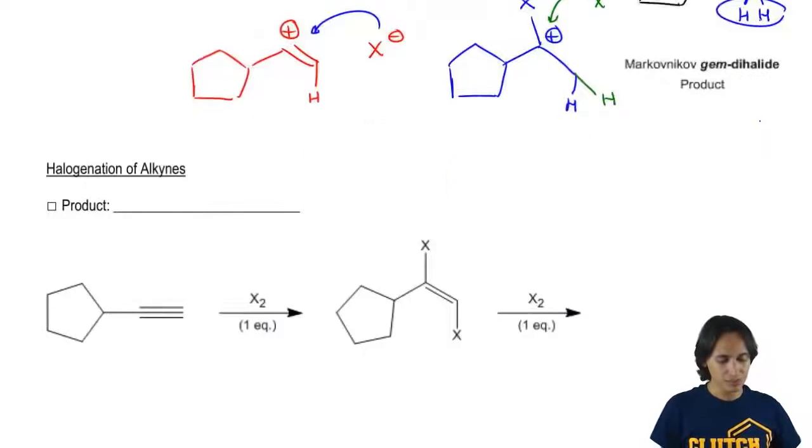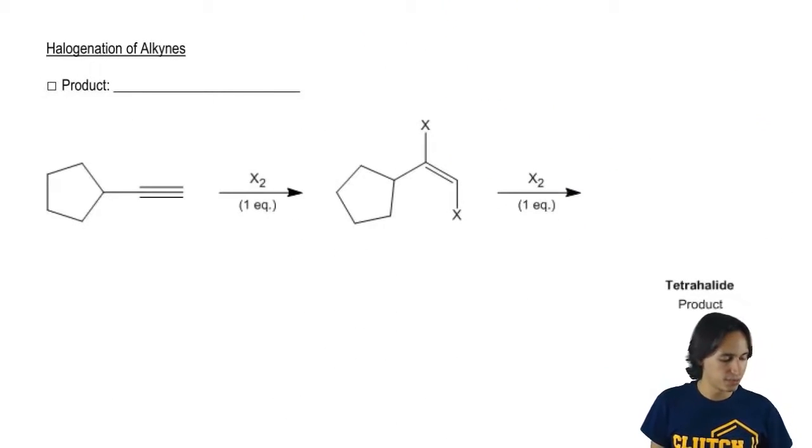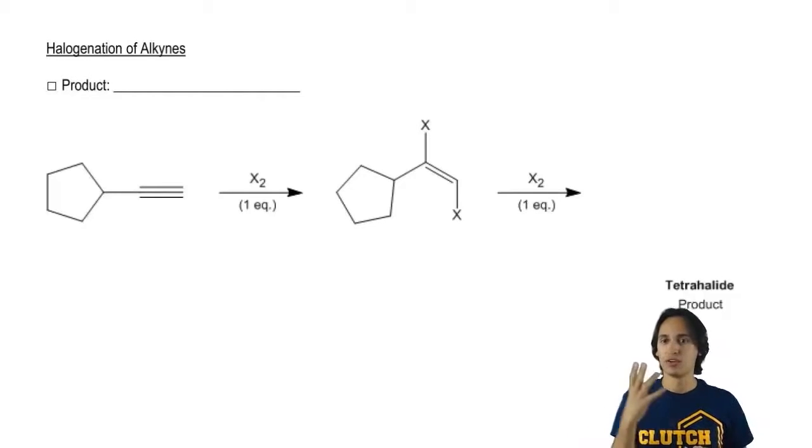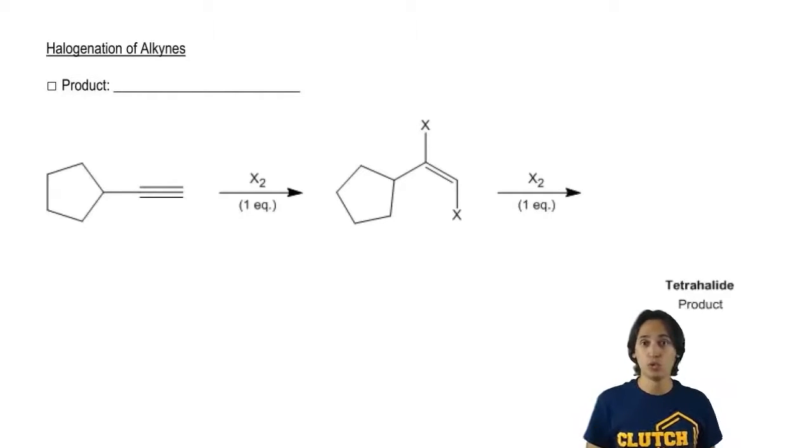Now let's go to halogenation. Halogenation of alkynes is going to be a very similar ordeal. What would we expect to get for halogenation of an alkene? We would expect to get vicinal dihalides.